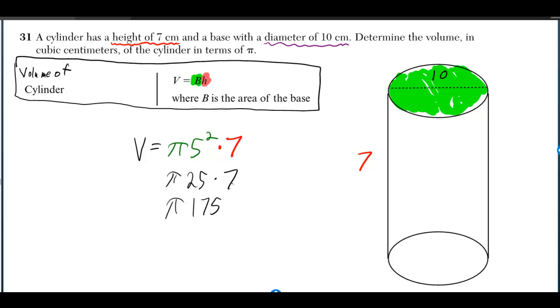So then pi times 25 times 7, so then pi times 175. Or most of the time we'll just write 175 pi. And they said they wanted it in terms of pi, so we leave our answer like this. We don't use 3.14, and the units are cubic centimeters.